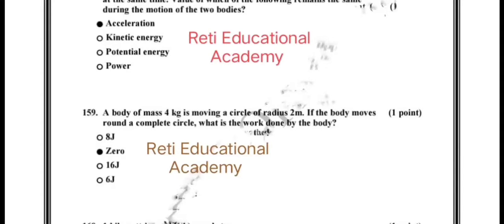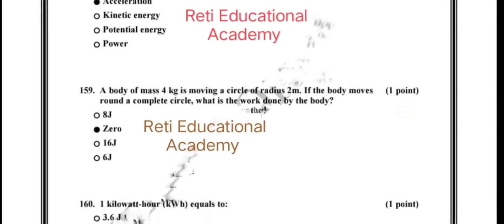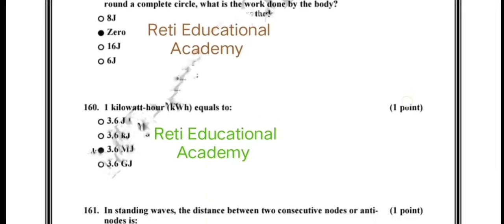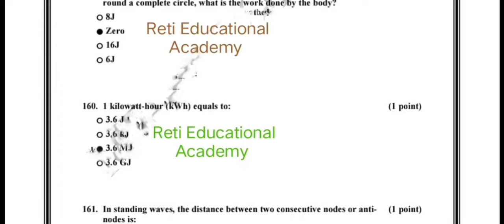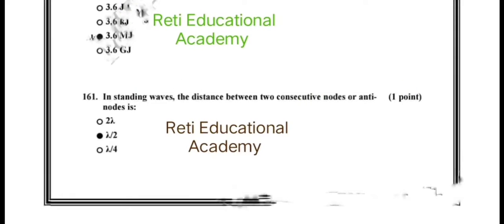Question number 159: a body of mass 4 kg is moving in a circle of radius 2 meters; if the body moves around a complete circle, what is the work done by the body? The correct option is it will be zero. Question number 160: one kilowatt-hour equals to, and it will be equal to 3.6 MJ.